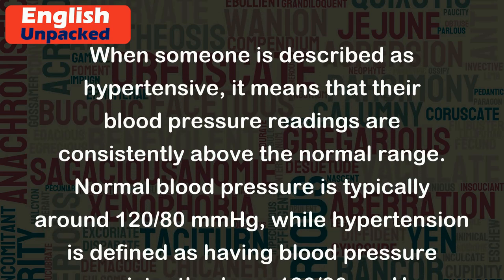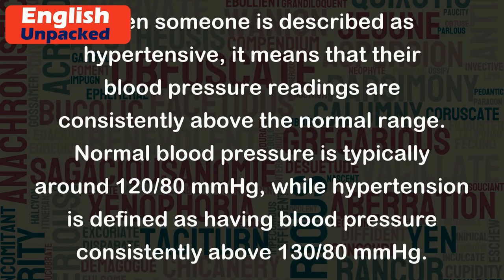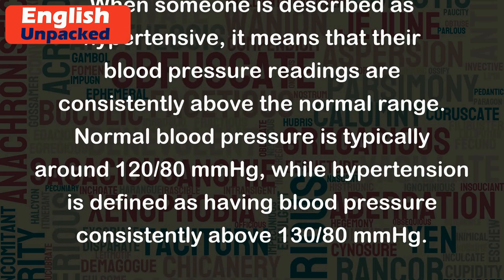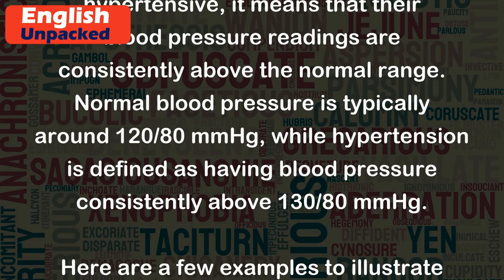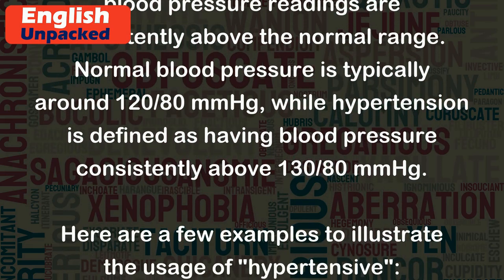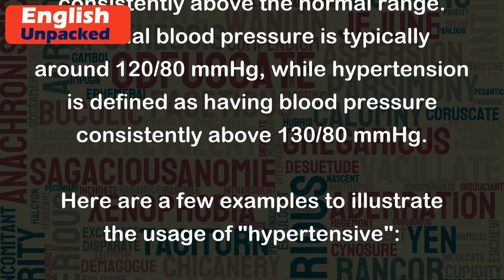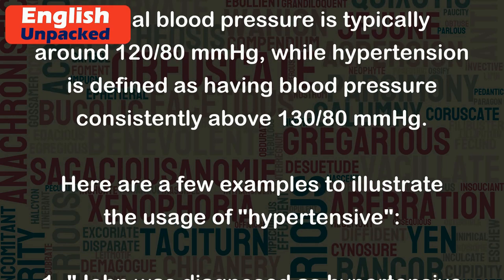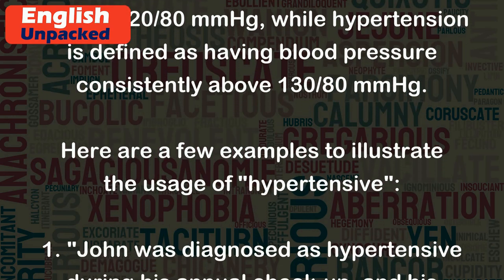Normal blood pressure is typically around 120/80 mmHg, while hypertension is defined as having blood pressure consistently above 130/80 mmHg.